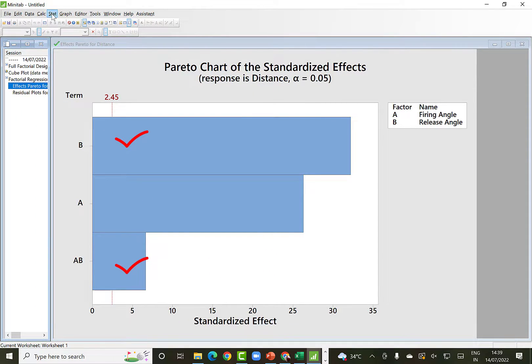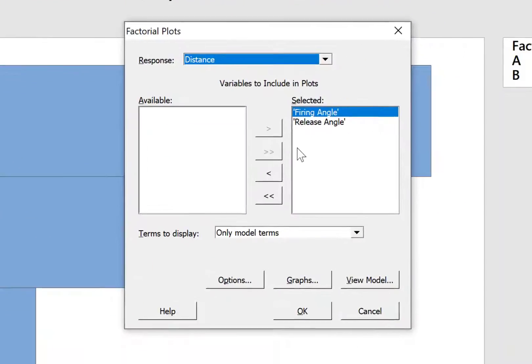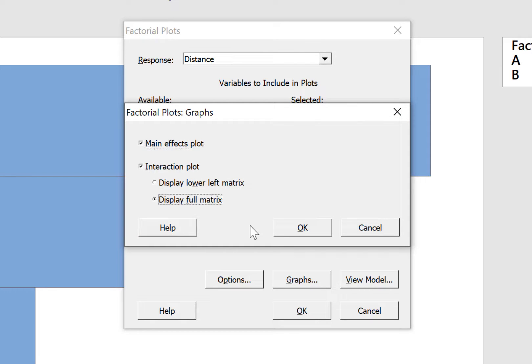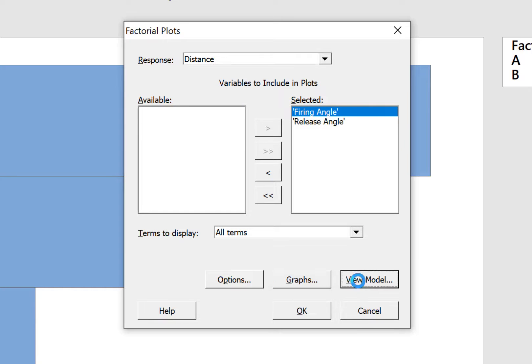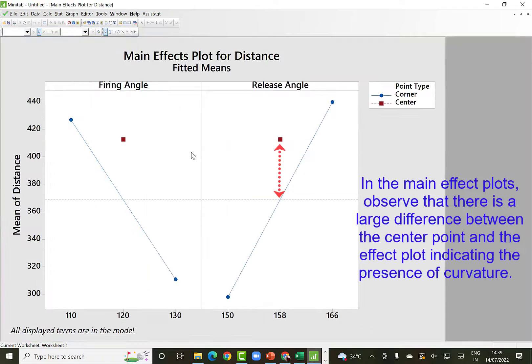We can now see the main effect and interaction plots by stat, DOE factorial and factorial plots command. And terms are already selected. Instead of model terms, you can select all. Here it doesn't matter because all terms are in the model. And select display full matrix. You can view the model at any time. And now in the options, if you want to give any heading and click OK. We can now see the main effect and interaction plots. In the main effect plots, observed that there is a large difference between the center point and the effect plots indicating the presence of curvature. This is shown by the arrows.